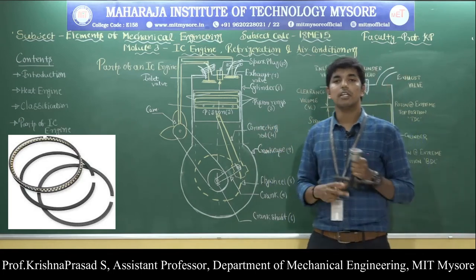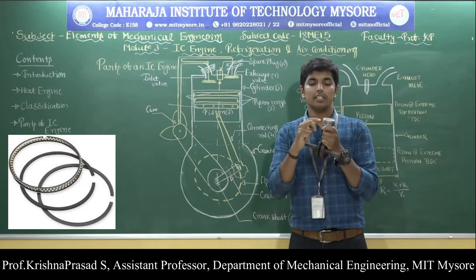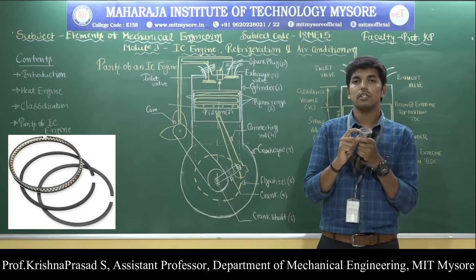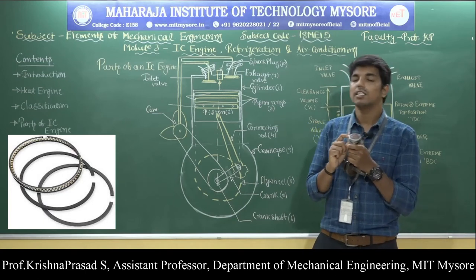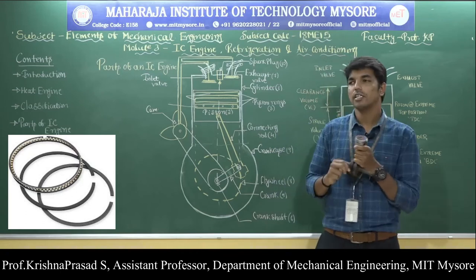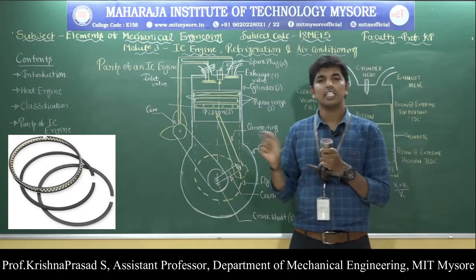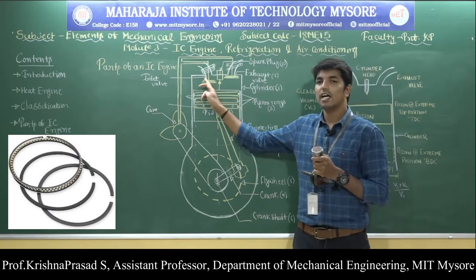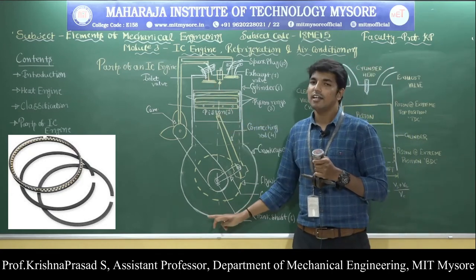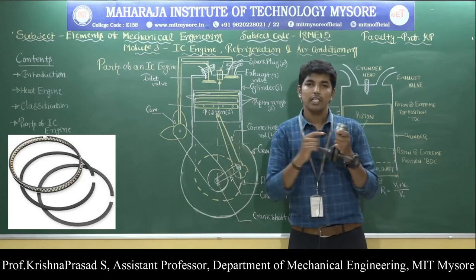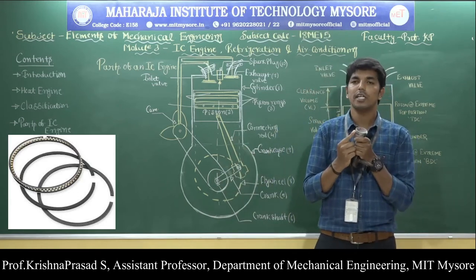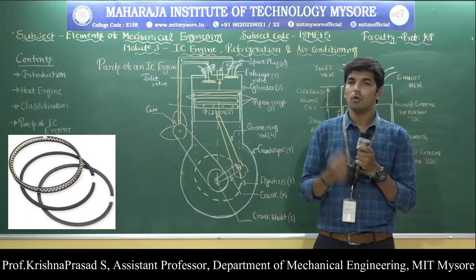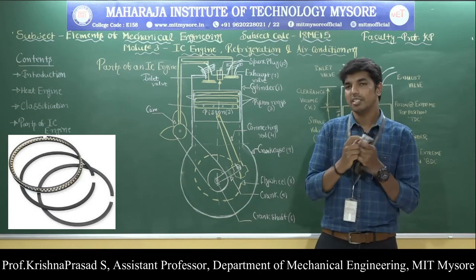The oil ring extracts excess lubricating oil present at the engine cylinder and sends it back to the oil sump through oil holes provided in the piston. So the compression ring maintains the gas-tight joint between the piston and cylinder, while the oil ring manages excess lubricating oil.